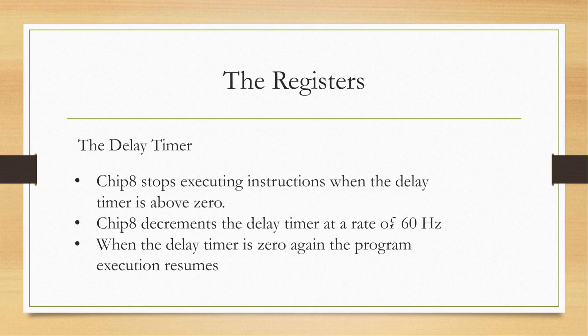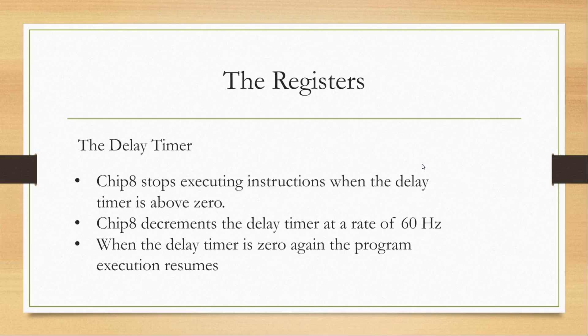The delay timer works similarly to the sound timer, except instead of playing a tune, it delays the program. It will stop executing instructions when the delay timer is above 0, then decrement the delay timer at a rate of 60 Hz. When the delay timer is 0 again, the program resumes execution. Think of it like pausing a game — everything stops, and it's based on a delay rather than an action.